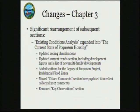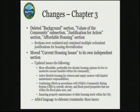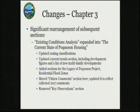The housing trends, housing characteristics, and housing estimates and projections sections have been updated to reflect more current data. There has been a significant rearrangement of subsequent sections. The existing conditions analysis has been expanded into a section called 'the current state of Pocosin housing,' which notes current zoning classifications, upgrades the current trend section including development figures, and lists new multi-family developments since the previous comprehensive plan. We've also added sections for the Legacy of Pocosin project and residential flood zones, moved and updated the citizen comment section to reflect 2017 comments, and removed the key observations section.